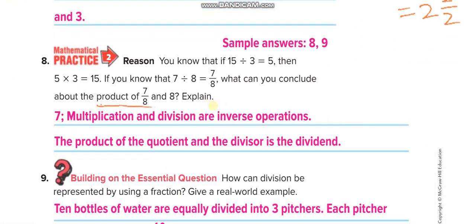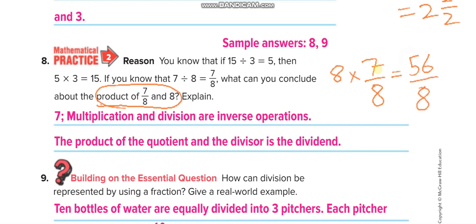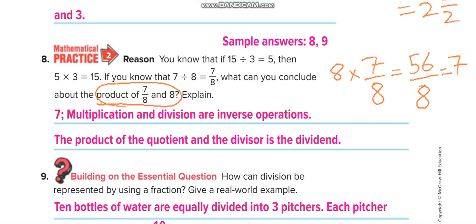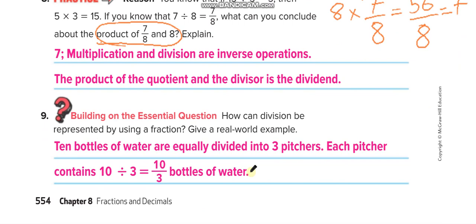The last example: find the product of seven-eighths multiplied by eight. When multiplying a whole number by a fraction, you only multiply the whole number with the numerator. Eight times seven is 56 over eight — an improper fraction. How many eights fit into 56? Seven exactly, with no remainder, so the answer is simply 7.